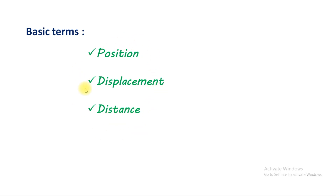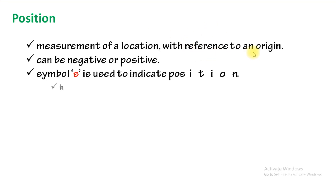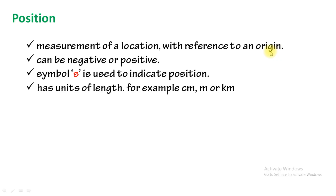Let's take a look at position. Position is the measurement of a location with reference to an origin. An object's position is measured relative to an origin or reference point. Position can be negative or positive, and its symbol is used to indicate position. Position has units of length.